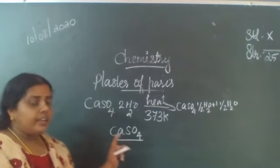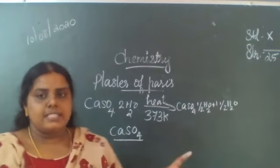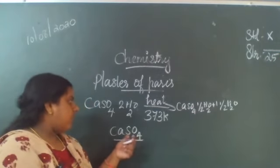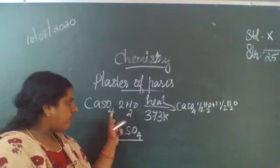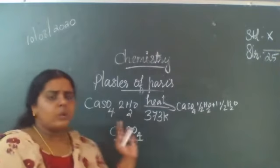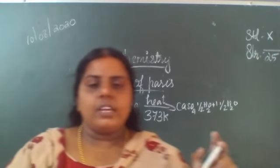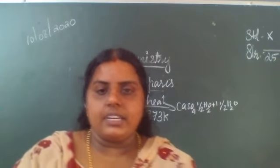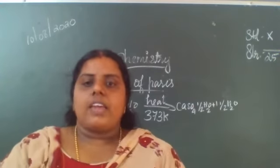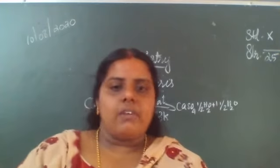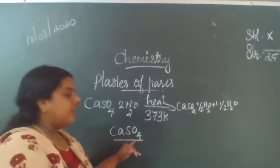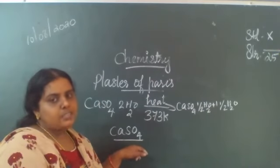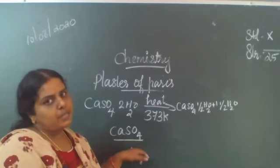When gypsum is heated above 400 degrees Celsius, it is called anhydrous calcium sulfate or dead burned plaster. It loses all its molecules of water, giving CaSO4 — that is dead burned plaster.